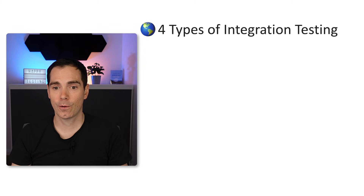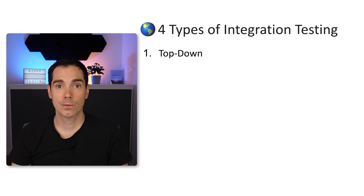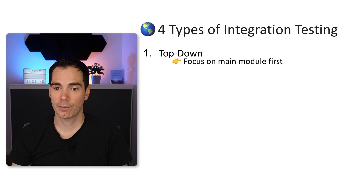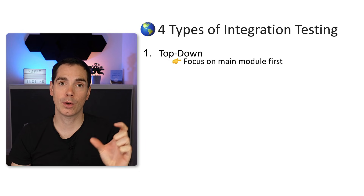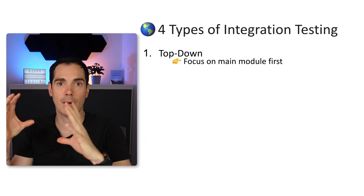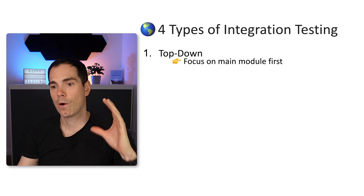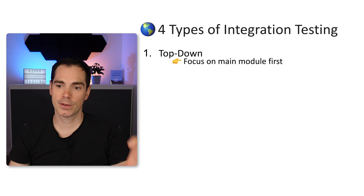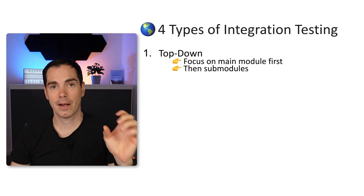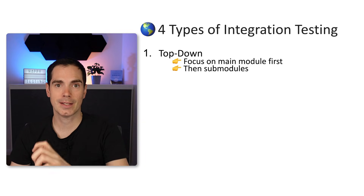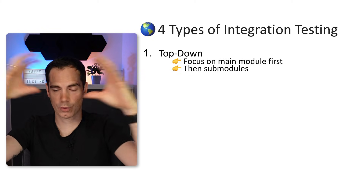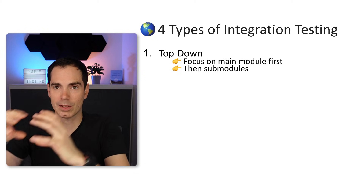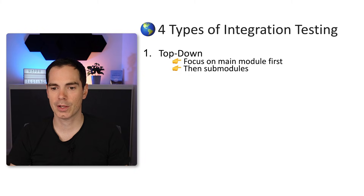Here are four types of integration testing. The first one is the top-down approach, which focuses on the main modules first. What are your main modules in your application? Focus on them first, integrate them first, then focus on the sub-modules. So you start at the top and work your way down.